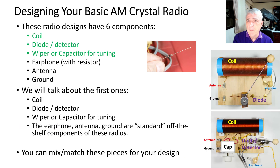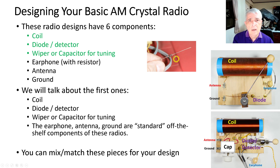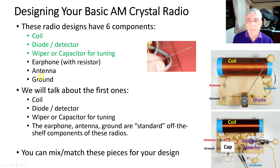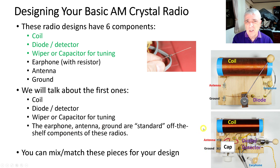These radios have six basic components: coil, diode detector, wiper or capacitor for tuning, antenna, and ground. Here is the detector, here is the coil on a wiper type, antenna, ground, the diode, and then an earphone. We're going to talk primarily about the first three — the coil, diode detector, and the wiper or capacitor for tuning. The antenna and ground don't change much between types of radios.